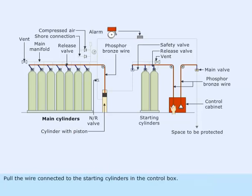Pull the wire connected to the starting cylinders in the control box. The gas released opens the safety valve in the system.